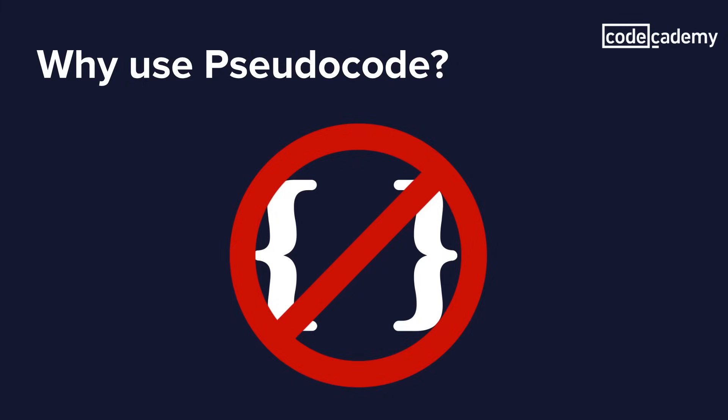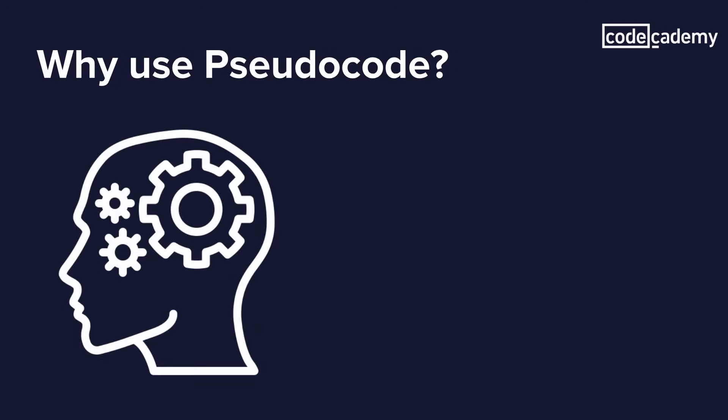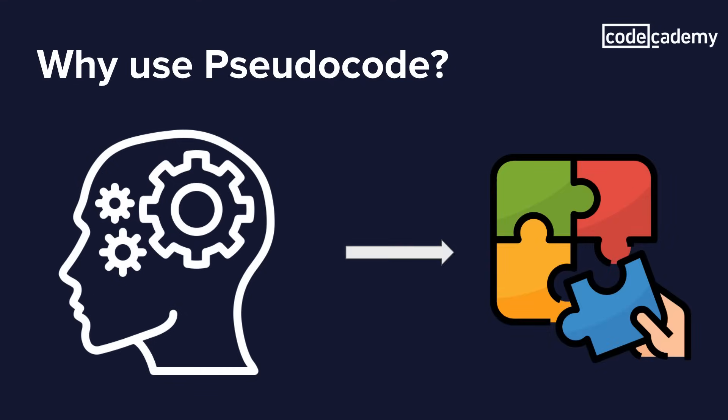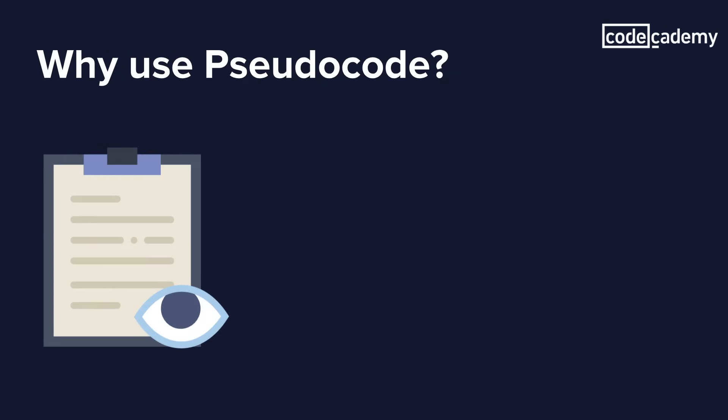So why else use pseudocode? Some people can visualize the entire solution to an algorithmic problem in their mind, while others may find it difficult to come up with a solution without first writing it down. In general, pseudocode won't do any harm, if not any good. It essentially helps us break down large problems into smaller, manageable pieces. Writing pseudocode allows you to think through a problem with some foresight and lets you anticipate important questions before they arise.